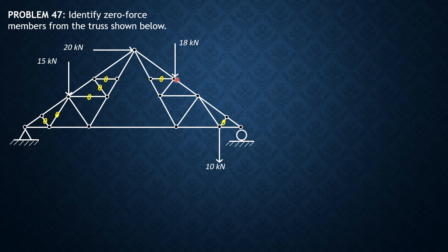If we proceed to the next joint, there are three members, but the fourth would be the 18 kN load, so it does not qualify for Case 2 — this member is not zero. There are four members here, so no zero-force members there. Those are all the zero-force members: there are 7 zero-force members in total for problem 47.